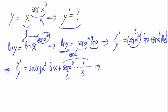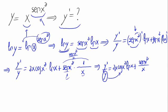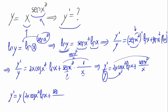So we have the derivative of y divided by y equals 2x times the cosine of x squared times the logarithm of x, plus the sine of x squared divided by x. The y in the denominator moves to the other side multiplying, so the derivative of y equals y times 2x times the cosine of x squared times the logarithm of x, plus the sine of x squared divided by x.